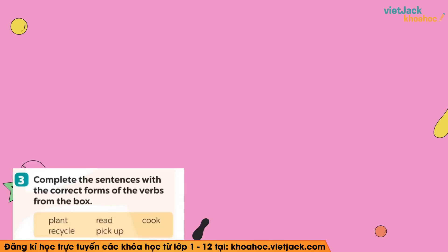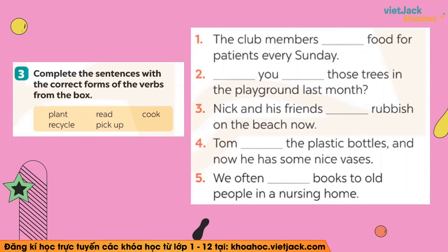Mình sẽ tiếp theo đến với bài tập số 3. Bài tập số 3 sẽ khó hơn một chút — mình sẽ không được cho động từ trước nữa, mà các bạn sẽ có một cái hộp gồm có 5 động từ. Các bạn sẽ đọc câu rồi chọn động từ phải hợp nghĩa với câu đó. Quan trọng nữa là ở đây người ta không chỉ định mình phải chia động từ theo cái thì nào — nghĩa là bây giờ các bạn sẽ phải xác định thêm cái câu đó ở cái thì nào nữa. Mình sẽ có 3 nhiệm vụ: xác định động từ cần ghép, xác định thì, và chia động từ với chủ ngữ và thì thích hợp.